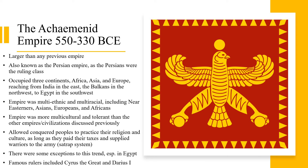Now we'll discuss the Achaemenid Empire. The Achaemenid Empire, which lasted from about 550 to 330 BCE, was larger than any previous empire in world history. Also known as the Persian Empire, since the Persians were the ruling class, the Achaemenid Empire spread over three continents — Africa, Asia, and Europe — reaching India in the east.